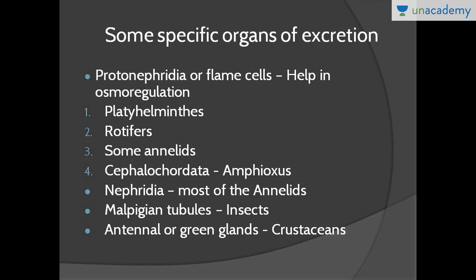Nephridia are present in most annelids, including earthworms. Malpighian tubules are present in most insects, including cockroaches. Antennae glands, or green glands, are present in crustaceans.